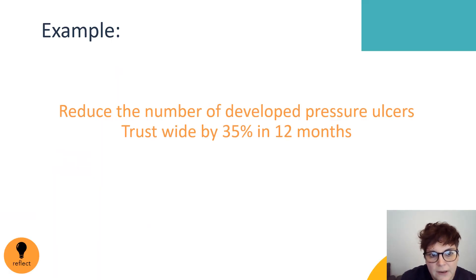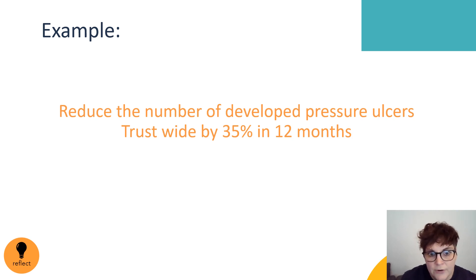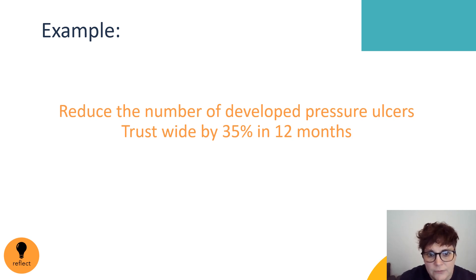Here's an example of a good aim statement: to reduce the number of developed pressure ulcers trust-wide by 35% in 12 months. We're being clear about what we're aiming to do, where the focus is — trust-wide, not just on a particular ward — and by 35% in 12 months, which is a good stretch. When doing an improvement project, it's good to start small and scale up. We could have set it at 15%, but would that have stretched us enough? If we reduce pressure ulcers by 30%, that's still a huge achievement, so remember to aim high.